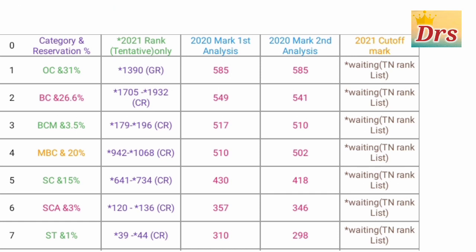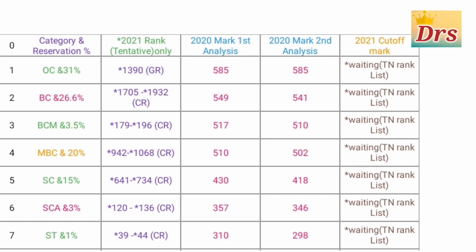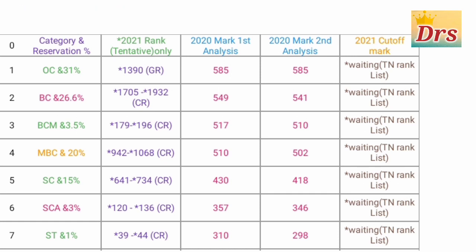The last box — the 5th box — is empty. That is the cut-off mark. We are waiting for that cut-off rank. Where is the cut-off mark? For Tamil Nadu, we will get the rank list and the exact analysis. That is why the last box is empty.